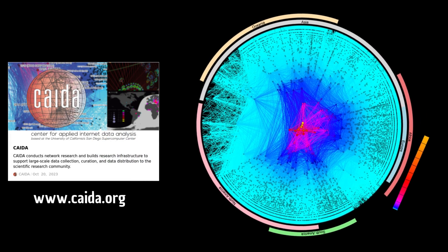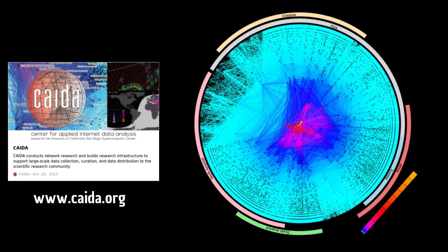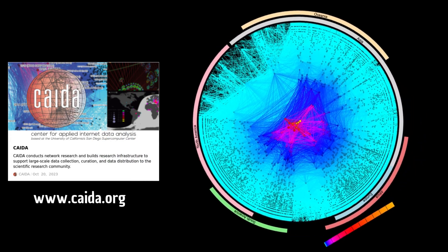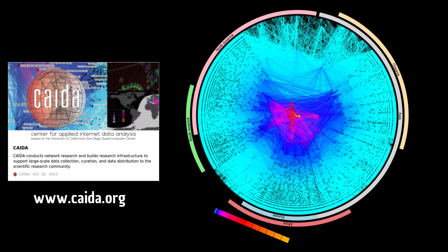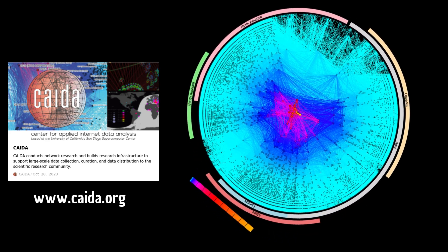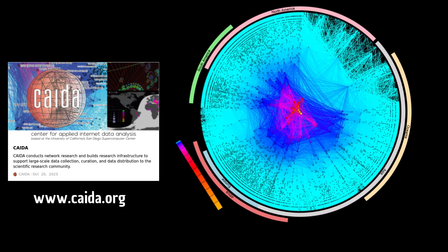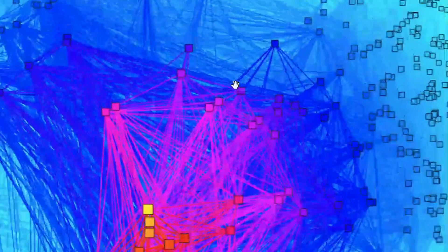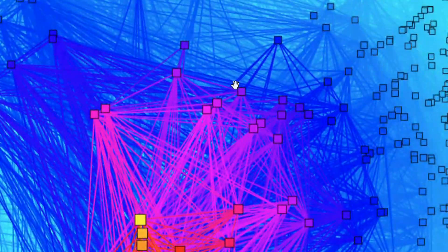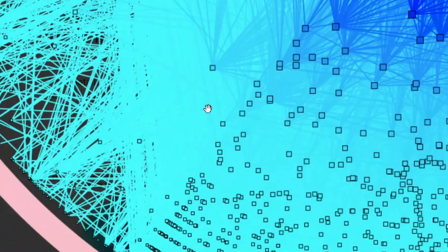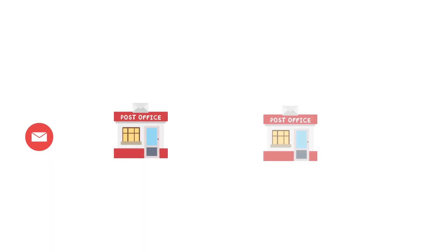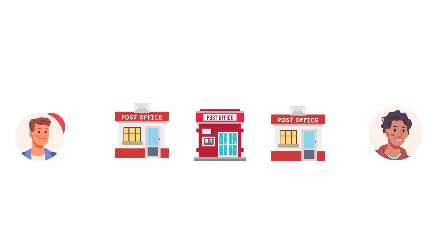Can you guess what this is? It's probably a spider web. Think of it as a web, but not a spider web — it's the World Wide Web, or the internet. If we zoom in, we will see small squares, each of which is a network.